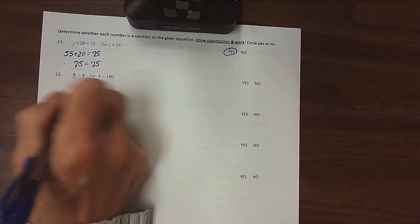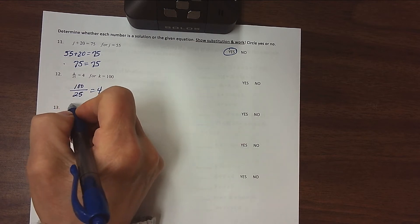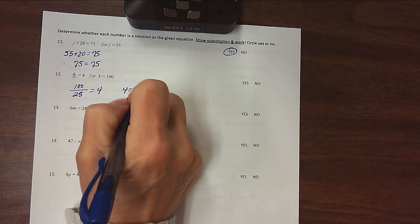Over here, we take out our k and replace it with 100. 100 divided by 25, does that equal 4? Well, 100 divided by 25 does equal 4, so that's a yes.